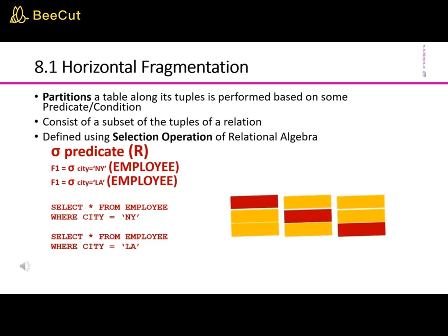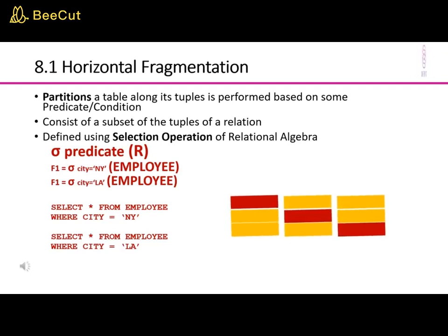Horizontal fragmentation is defined using the selection operation of relational algebra. For example, we partition the employee table based on the city: the first fragment selects all attributes from the employee table where the city is New York, and the second selects all attributes from the employee table where the city is Los Angeles.